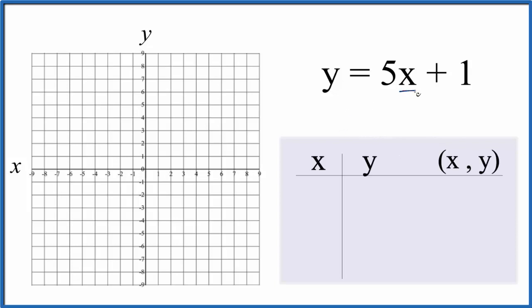So let's start by putting a value in for x. I like to start with 0. 5 times 0, that's 0, 0 plus 1, that gives us a y value of 1.